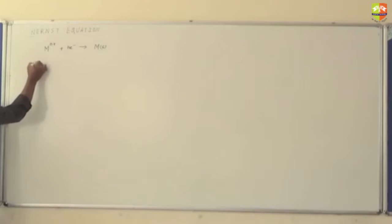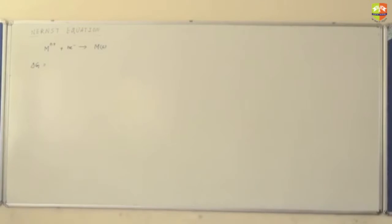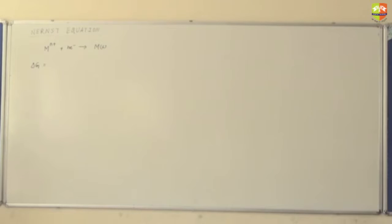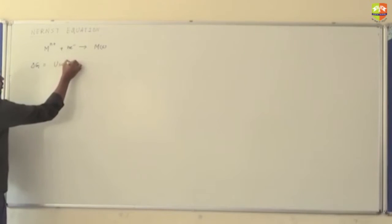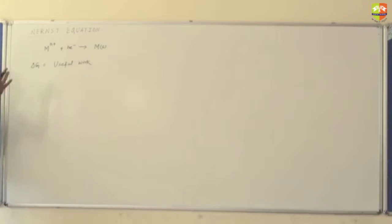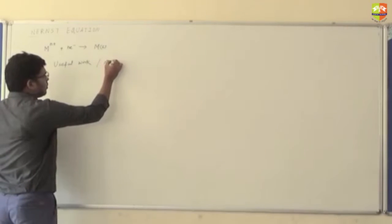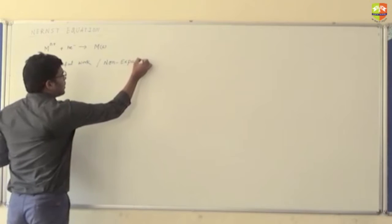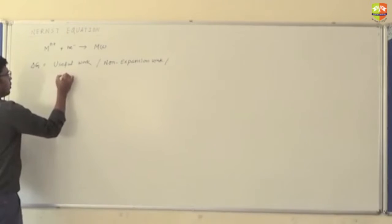Now, what is delta G? Delta G is the energy. What is the physical significance of the energy? It is spontaneous. It is a non-expansion work, non-useful work. So, delta G — the physical significance of delta G — it is defined as useful work, or a negative of the useful work, and we also call it as non-expansion work.